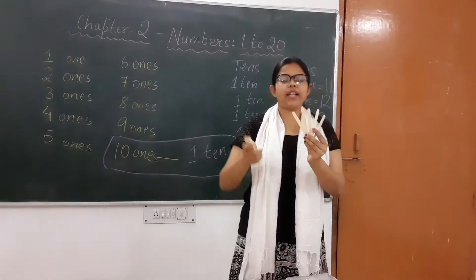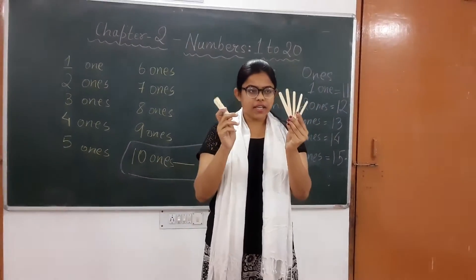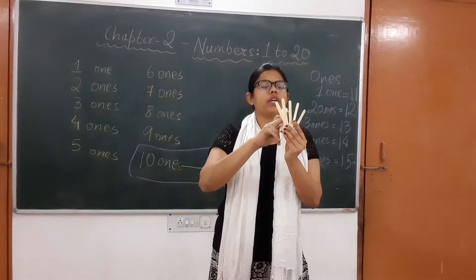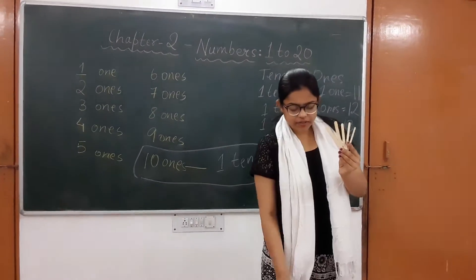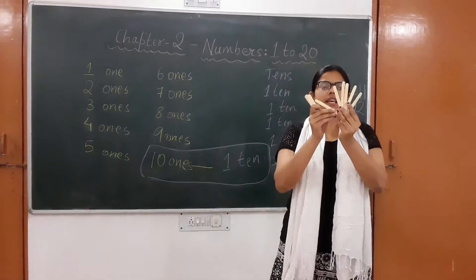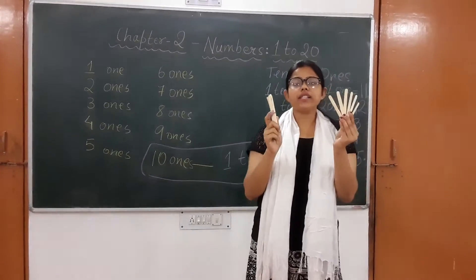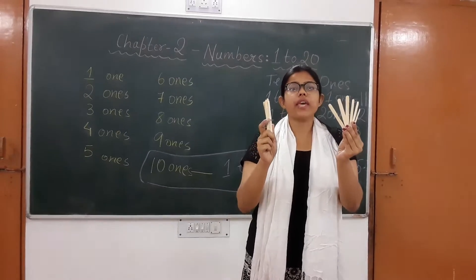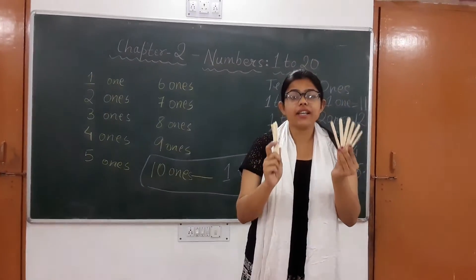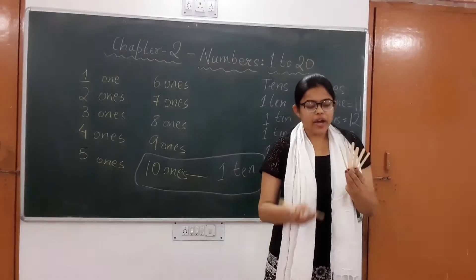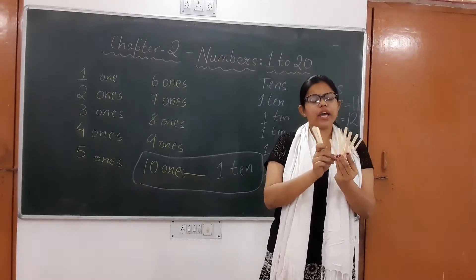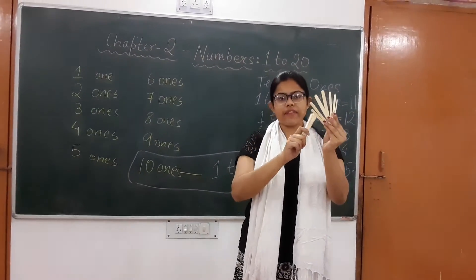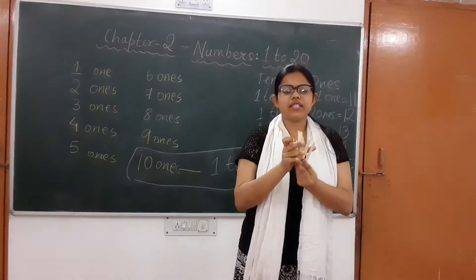Now you will tell me which number I have in my hands. This is 1-ten and how many ones? 1-2-3-4-5-6. So, what is the number? 1-ten and 6-ones makes 16. Now, I have one more ice cream stick and it becomes 1-ten and 7-ones, which makes 17.